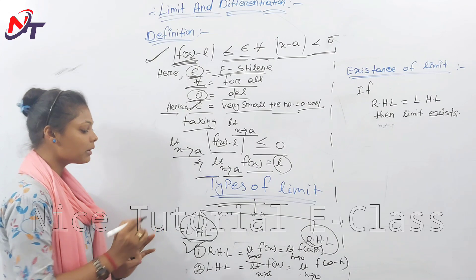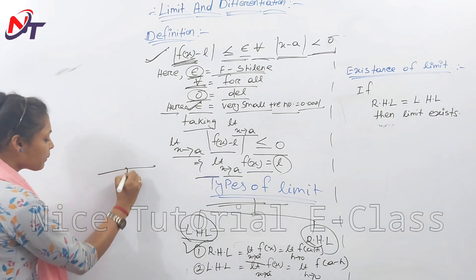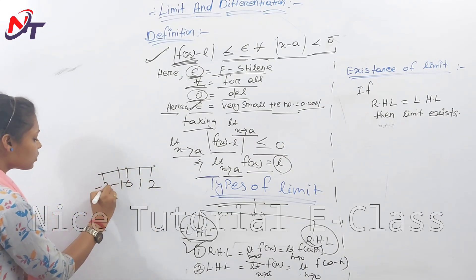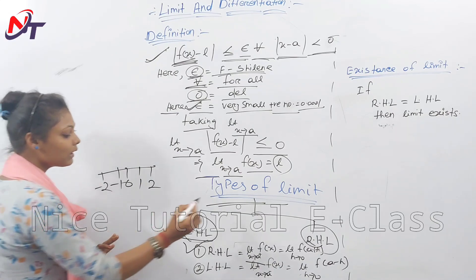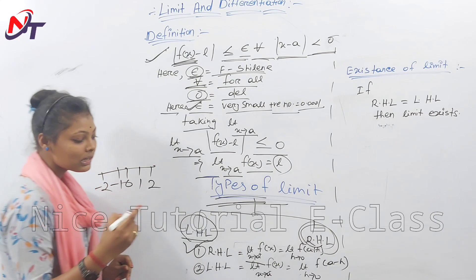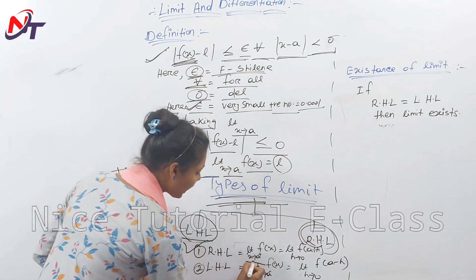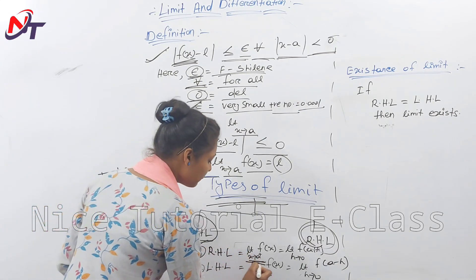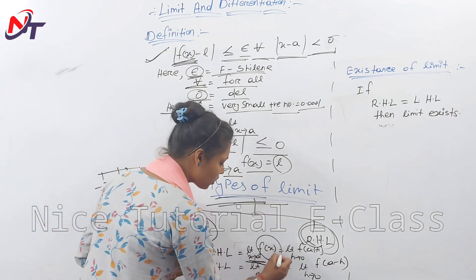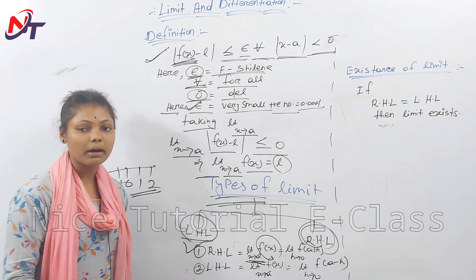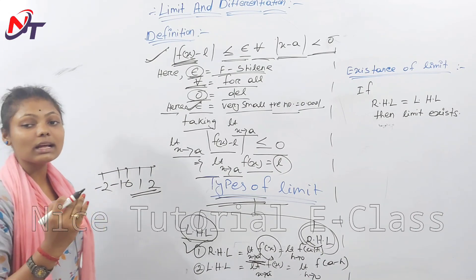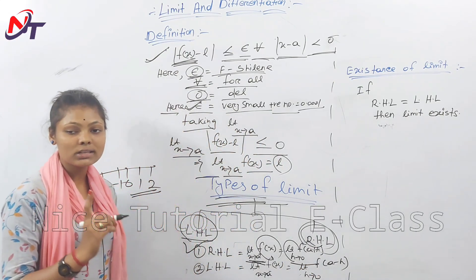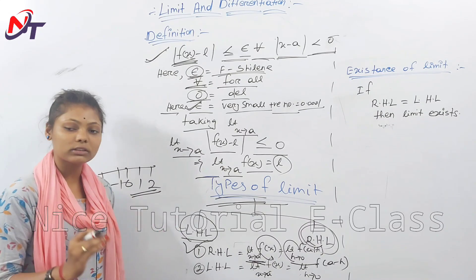The right-hand limit means: limit as x tends to a from the positive side, i.e., limit x → a+, of f(x). This is equivalent to limit as h tends to 0 of f(a + h), which is the right-hand side.